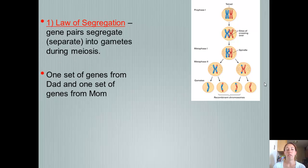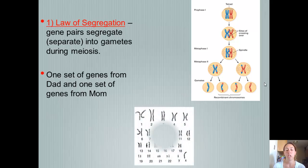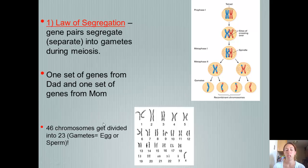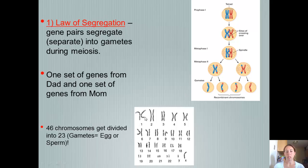One set of genes comes from your dad and one set of genes comes from your mom. You get 46 chromosomes and they get divided into gametes. If these were your chromosomes, you'd have 46 altogether — one in each pair from your mom and one from your dad — giving you 23 pairs of chromosomes.